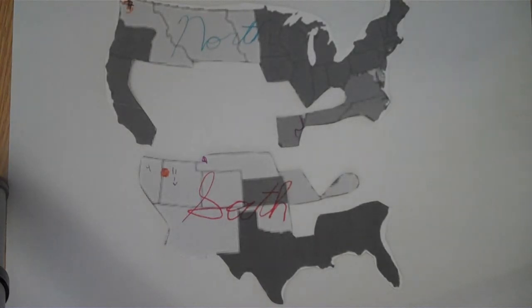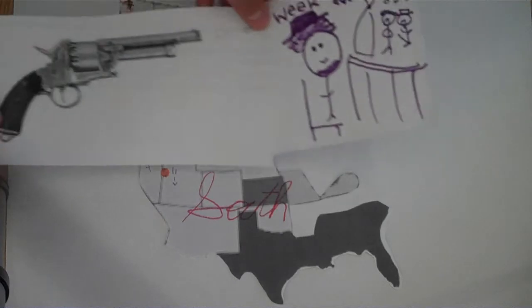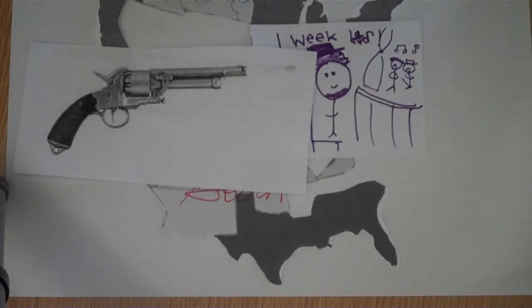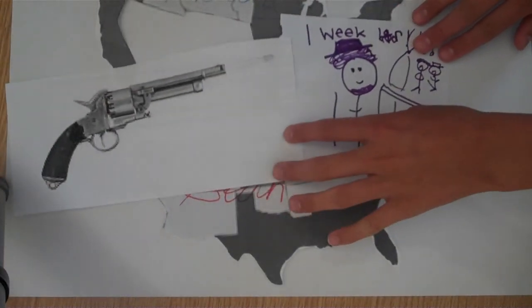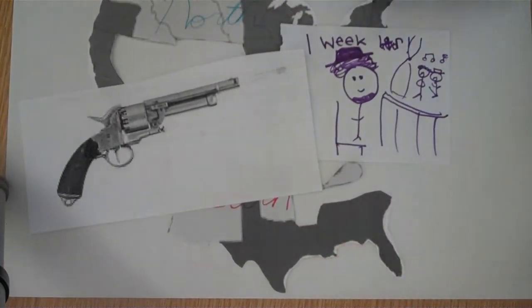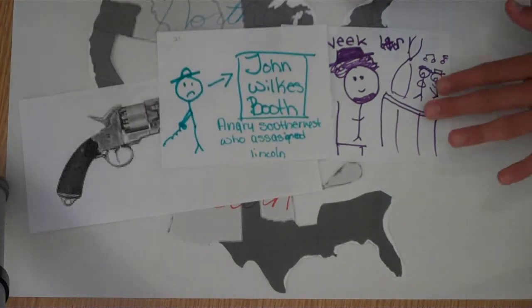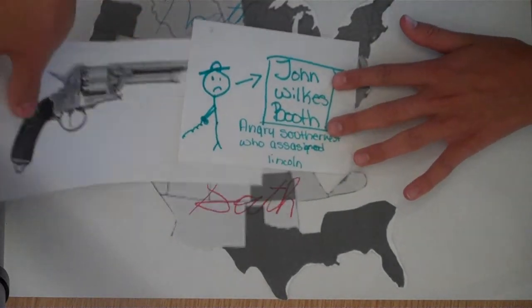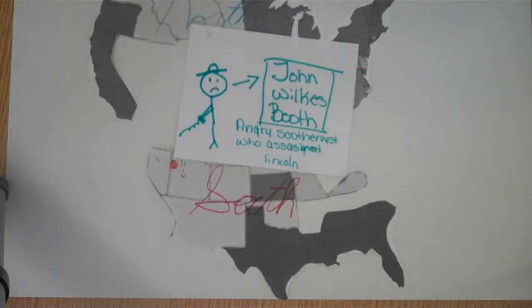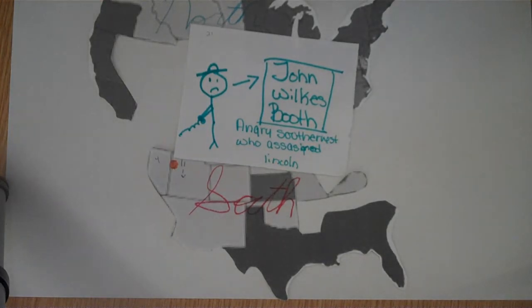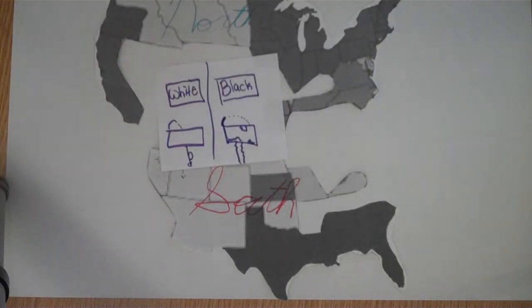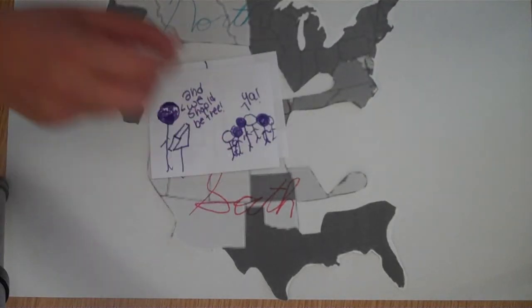Around one week later, the North's president Abraham Lincoln was shot. The North believed John Wilkes Booth and angry Southerners assassinated Abraham Lincoln. Also, even though slavery was abolished, there was a lot of segregation in the South, which Martin Luther King Jr. helped get rid of, which led all the way up to today.